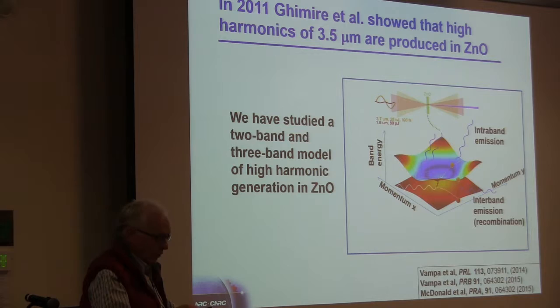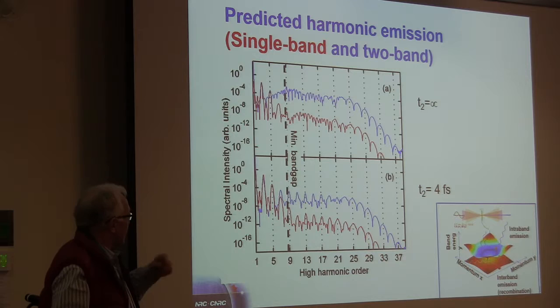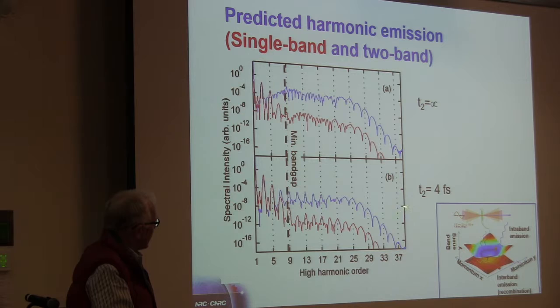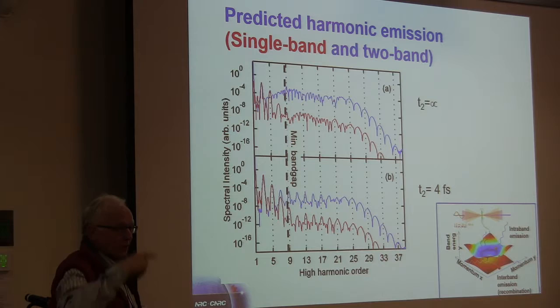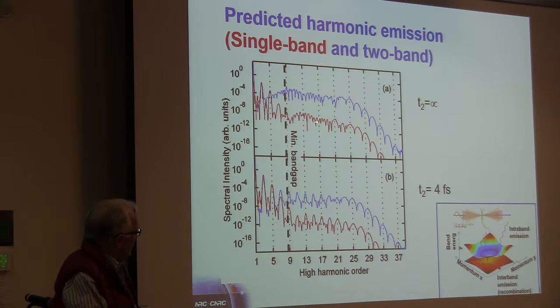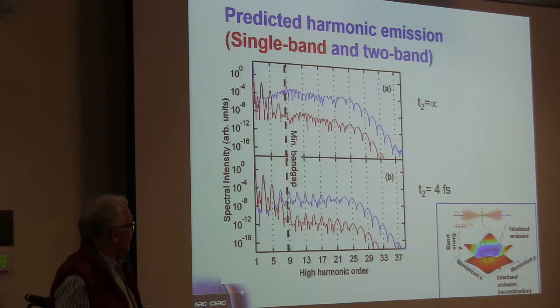So here's the results of the calculations for two different cases: no dephasing and dephasing of four femtoseconds, which I think is relatively realistic for the solid. Shown here in blue are the results of a two band contribution. This is a recombination-like process coming back again. And here's the results from the one band contribution. Both create harmonics, but both create them at a different magnitude. You have to notice that's four orders of magnitude. So the differences are about four orders of magnitude.